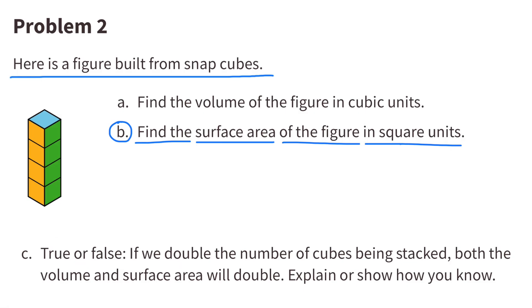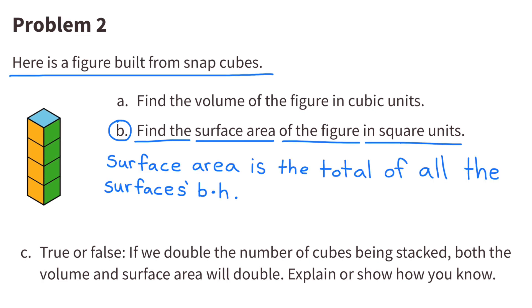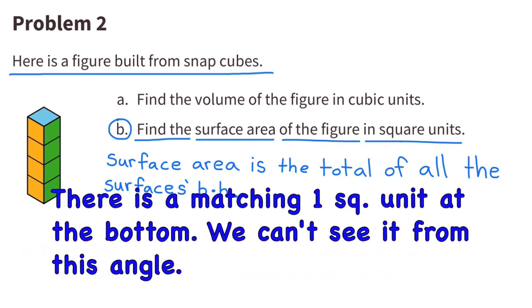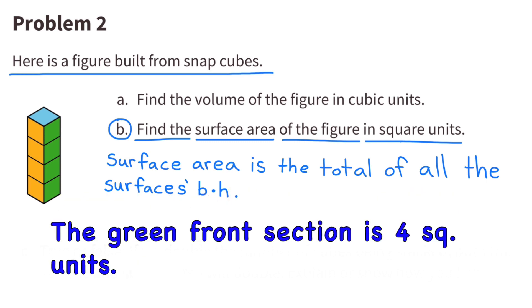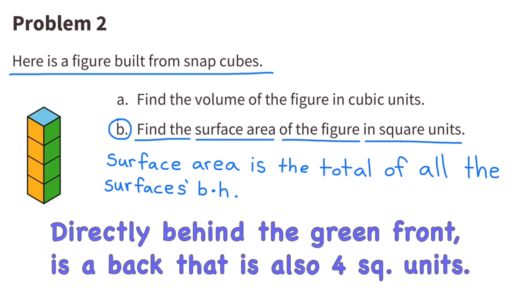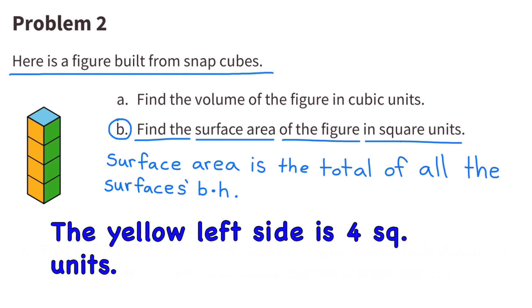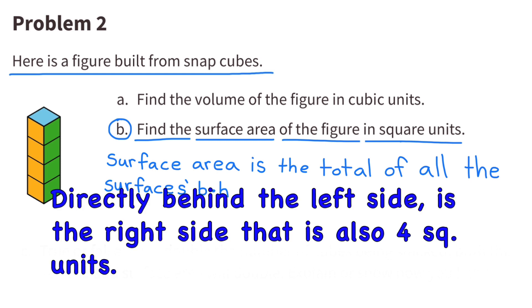B: find the surface area of the figure in square units. The surface area is the total of all the surfaces. From this angle we can see a top of one square unit (shown in blue), and there is a matching one square unit at the bottom. The green front section is four square units, and directly behind it is a back that is also four square units. The yellow left side is four square units, and the right side is also four square units.